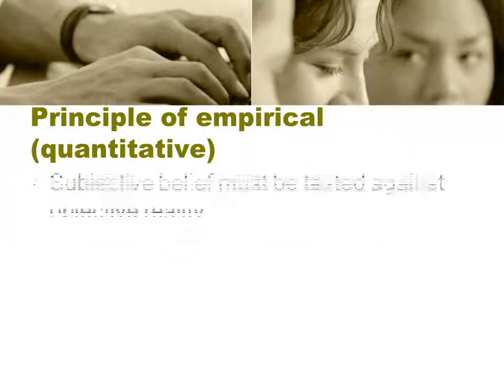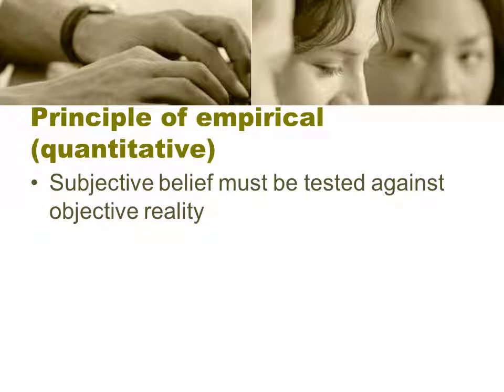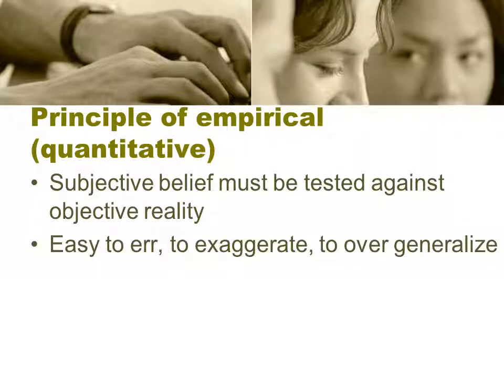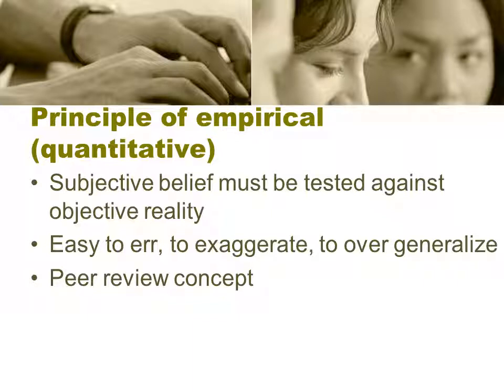What are some of the principles of empirical or quantitative research? The subjective belief must be tested against the objective reality. We have a hypothesis, we conduct an experiment to test based on our observation whether or not that hypothesis is true. It's easy to make a mistake because we tend to believe in things so much we might exaggerate or overgeneralize. That's where the peer review concept comes in — you need to have your work critically evaluated and critiqued by non-believers to make sure we stay objective.